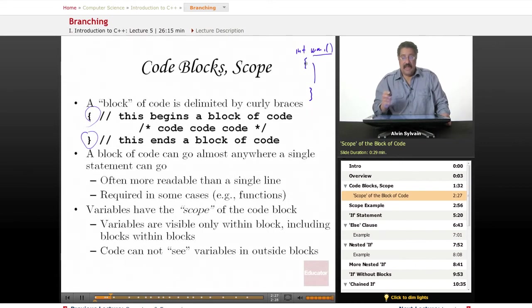Now inside a block of code your variables have scope which means they can see everything inside that block of code. They can't see anything outside. Nothing outside can see inside the block. It's a way of encapsulating your code from the rest of your code. So code cannot see variables in other blocks.